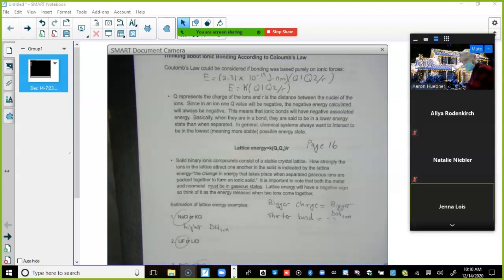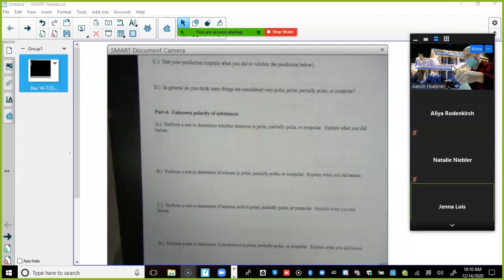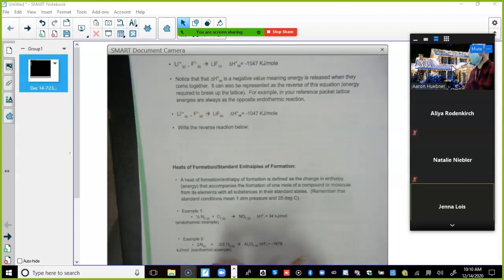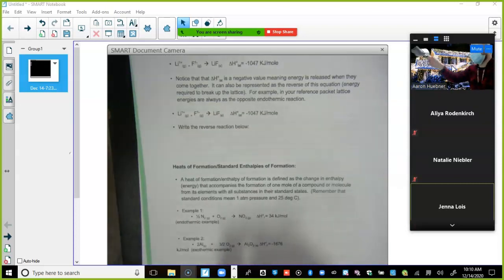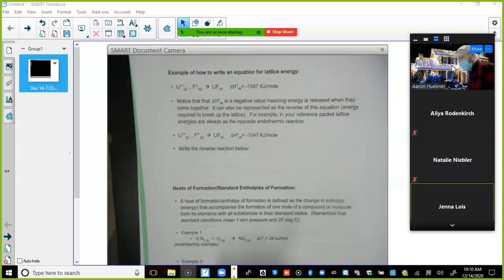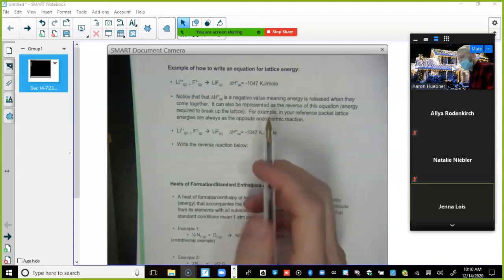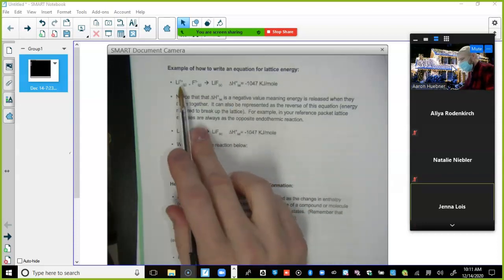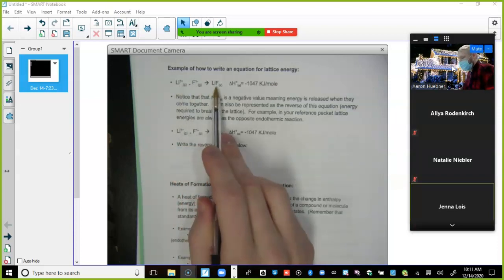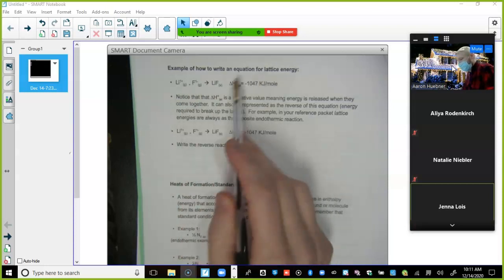All right, and then the next one. We got BaCl2 or BaO. For this one, barium is 2 plus, barium is 2 plus, that's not different. However chlorine is 1 minus but oxygen is 2 minus. Which one has a bigger charge? The 2 minus one, you got it. So oxygen has a bigger charge than chlorine. Bigger charge equals bigger lattice enthalpy, so barium oxide is going to have a higher lattice enthalpy. So a key to know is bigger charge more energy or shorter bond more energy. And that makes sense because lithium chloride going back to number 2 has a shorter bond, higher electronegativity, so it's going to take more energy to pull it away to break it apart.